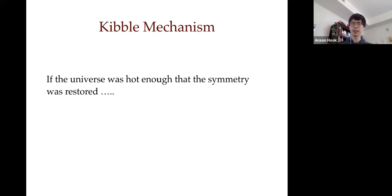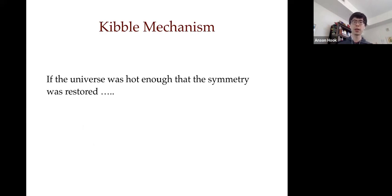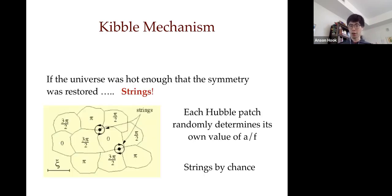How do people believe strings form? The easiest mechanism actually happens in the lab — the Kibble mechanism (or Kibble-Zurek in condensed matter). In the early universe, if you have an angular variable, you treat it as an XY coordinate including the radial direction. As the universe cools, you automatically get strings. In the early universe, you start at the origin where the angle theta is undefined. As you cool, you leave the origin and must choose a value of theta to sit at.